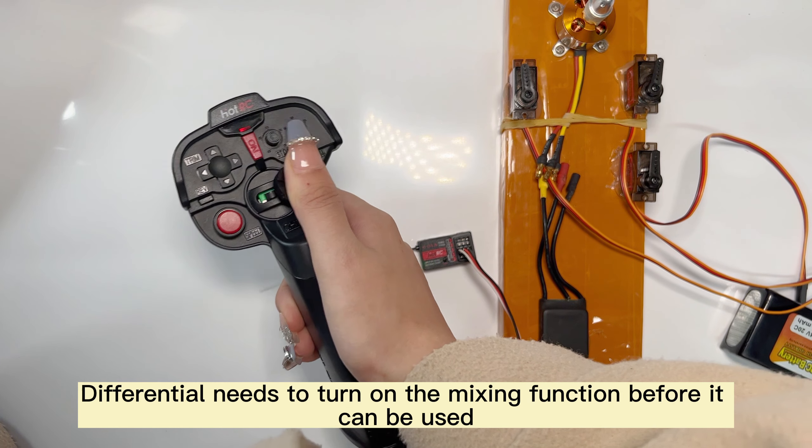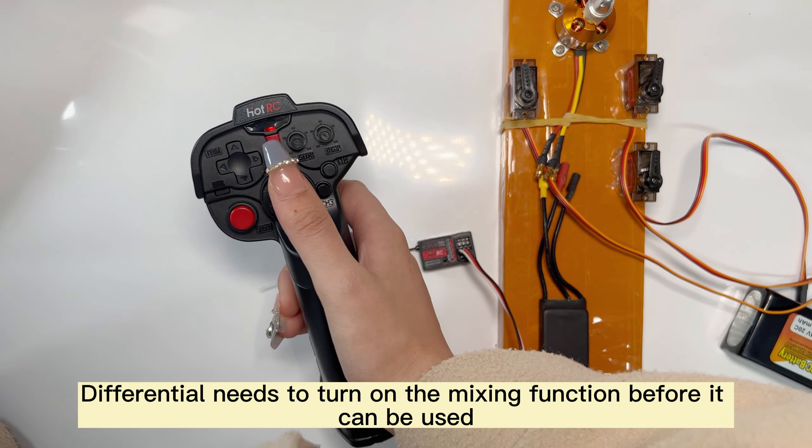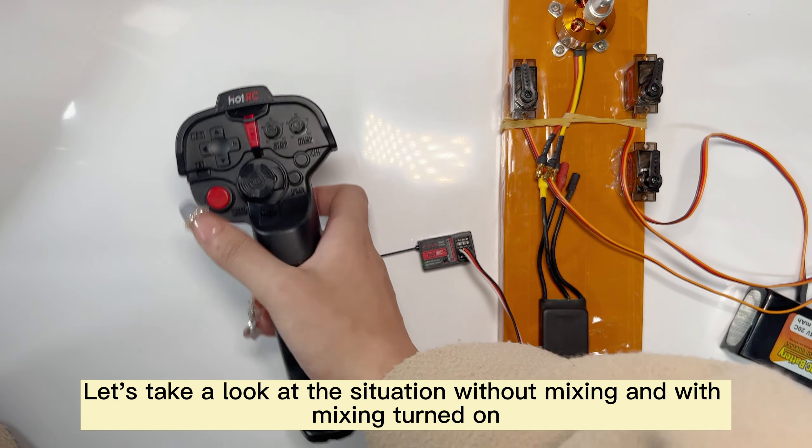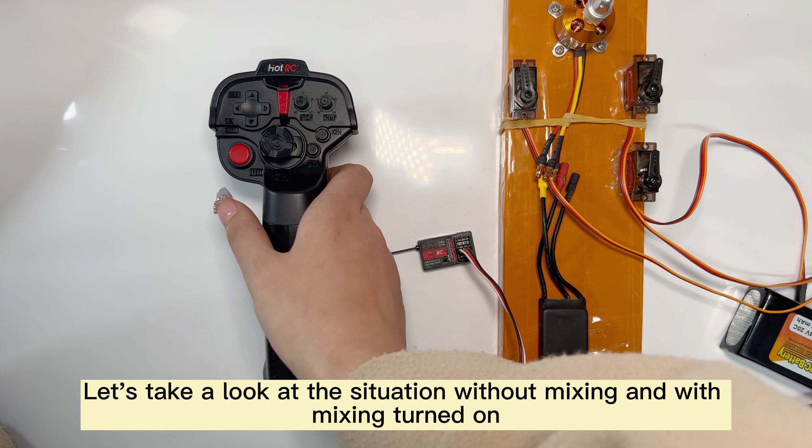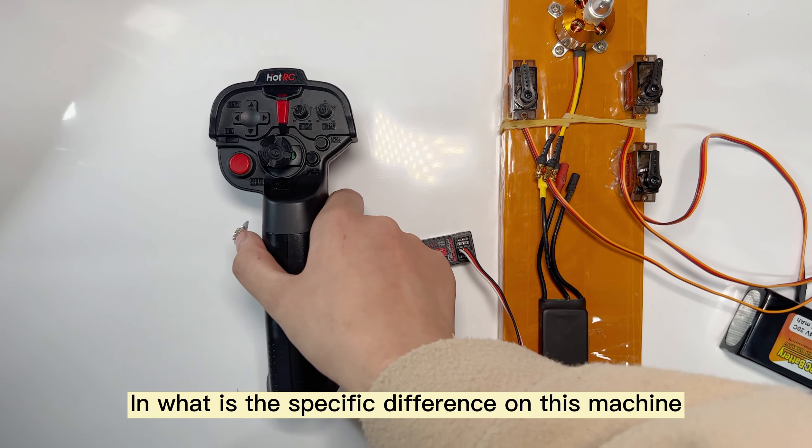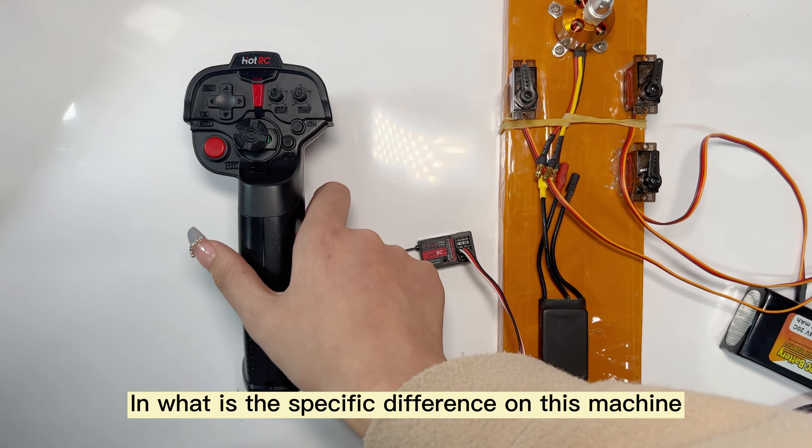Differential needs to turn on the mixing function before it can be used. Let's look at the situation without mixing and with mixing turned on. What is the specific difference on this machine?